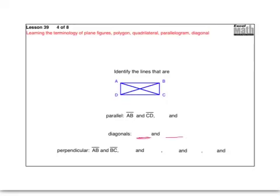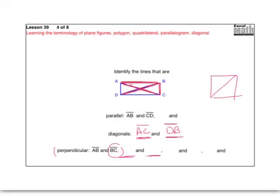Now for perpendicular: which segments are perpendicular? AB and BC are identified as one pair. I always want you to trace these with your pencil to prove what you're thinking. There are three other sets of perpendicular line segments — you can have a set here, here, and here. Believe it or not, there are three more pairs of perpendicular segments. See if you can find those. Pause the video and turn it back on when you're ready for the solutions.